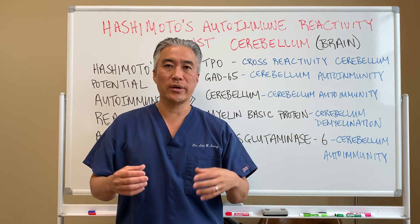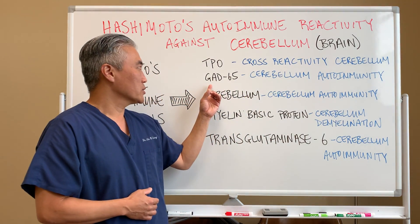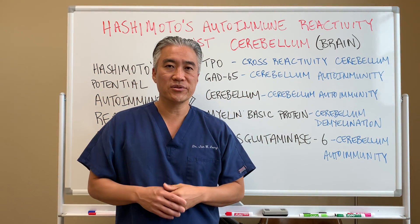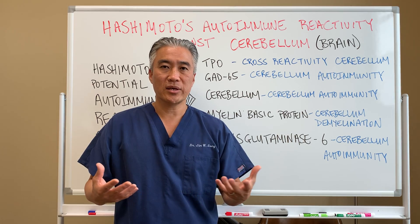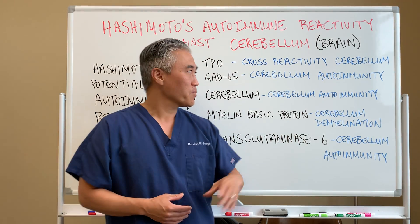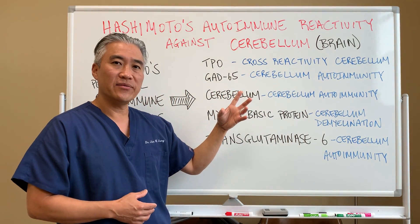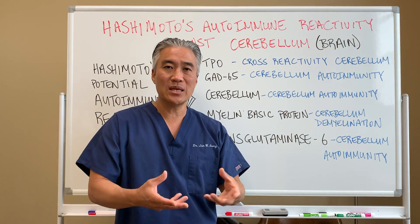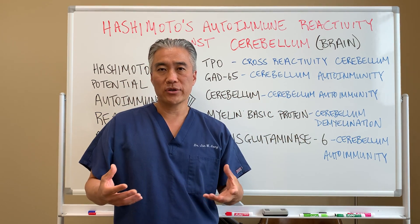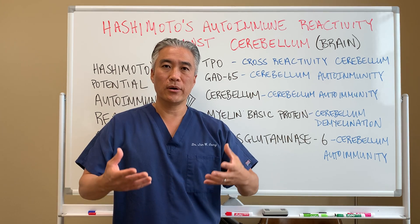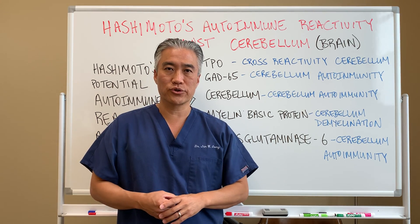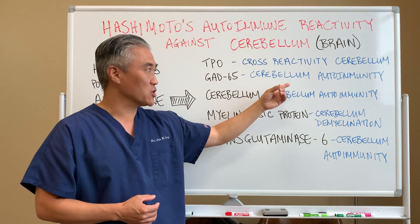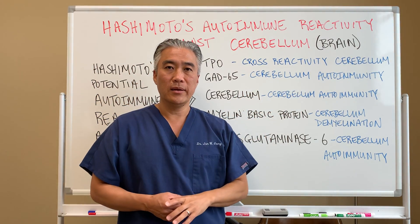GABA is inhibitory and calming. The cerebellum has what we call Purkinje cells, which are highly GABAergic. So if you have GAD-65 and you have antibodies against that enzyme, you have a hard time producing GABA — your relaxing neurotransmitters. You can then have issues or dysfunction of the cerebellum as a side effect.